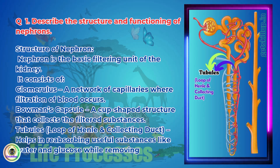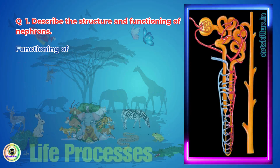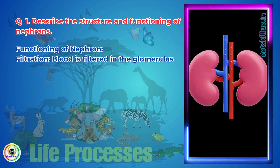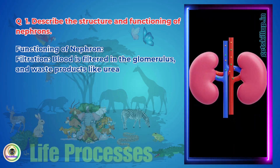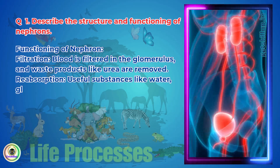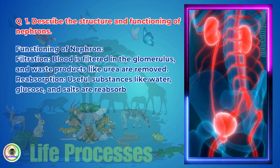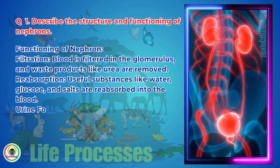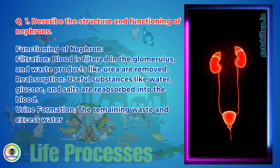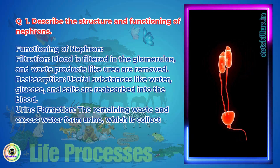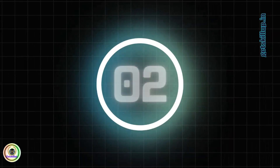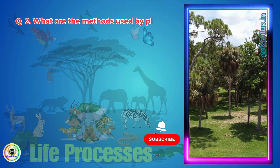Functioning of the nephron: Filtration — blood is filtered in the glomerulus and waste products like urea are removed. Reabsorption — useful substances like water, glucose, and salts are reabsorbed into the blood. Urine formation — the remaining waste and excess water form urine, which is collected in the bladder for excretion.